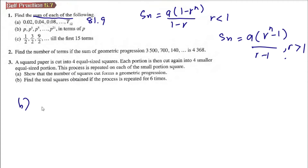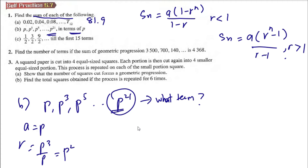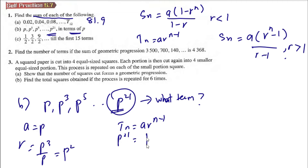For part B, we have the series P, P³, P⁵ until P²¹. A = P, R = P³ / P = P². We need to find what term P²¹ is, using the formula Tₙ = A · Rⁿ⁻¹. So Tₙ = P · (P²)ⁿ⁻¹, where Tₙ = P²¹.